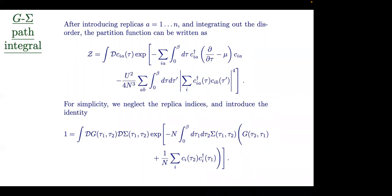We need to send the replica number to zero — it's a replica index — so we just take everything to be replica diagonal. We've studied what happens otherwise: when you're in a spin-glass phase with related models, you have to worry about that index. But as long as you're not in the spin-glass phase, you can just ignore it. For computing higher moments of Z you need to worry about replicas, but right now for the average partition function it makes no difference.